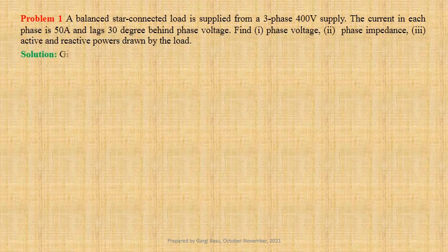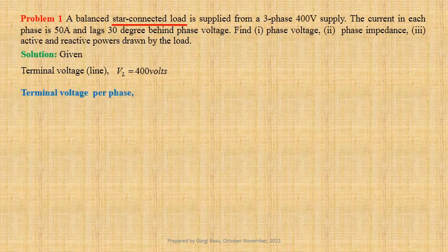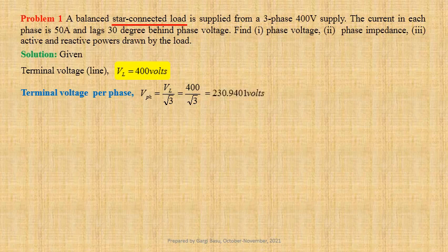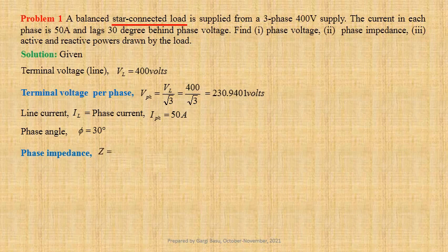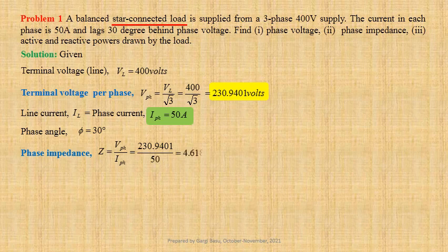Let us first write down the given data. Line to line terminal voltage VL equals 400 volts. Since the load is star connected, terminal voltage per phase V_phase equals VL divided by root three, that is 400 divided by root three, giving us 230.94 volts. For star connected load, line current IL equals phase current I_phase, that is equal to 50 ampere. Phase angle phi equals 30 degrees. Phase impedance Z equals V_phase divided by I_phase, giving us 230.94 divided by 50, that is 4.6188 ohm.